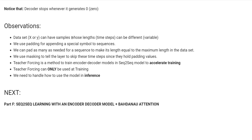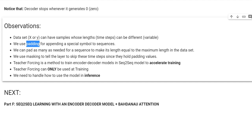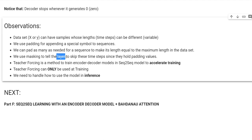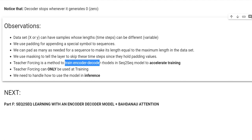In summary: datasets X or Y can have samples whose sequence lengths can be different. We use masking to tell the sequence processing layer (LSTM) to skip padding time steps. Teacher forcing is a method to train encoder-decoder models in sequence-to-sequence tasks to accelerate training, but a teacher-forcing model can only be used for training — for inference you need to create a new model using the trained layers.